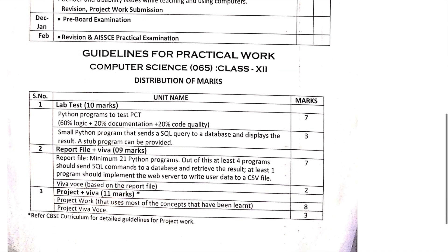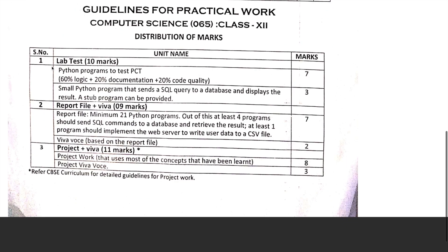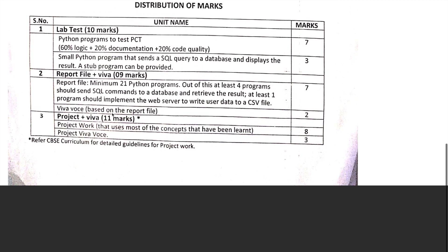For Computer Science practicals, Python programming will be 7 marks. SQL queries will be 3 marks. The report file plus viva will be 7 marks. You also have to make a project, which will be 8 marks plus 3 marks. The total for practicals will be 30 marks.